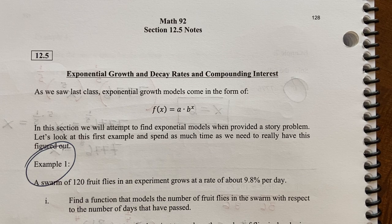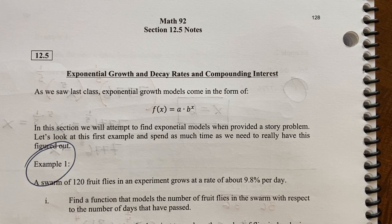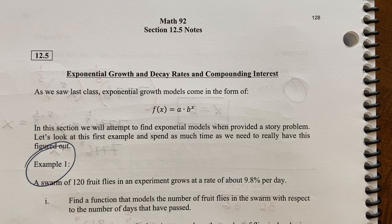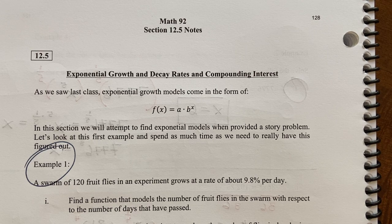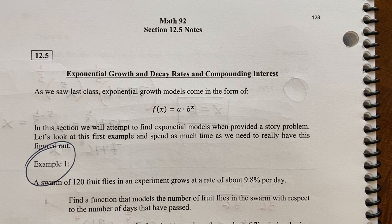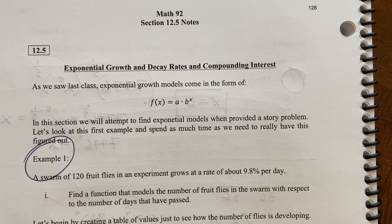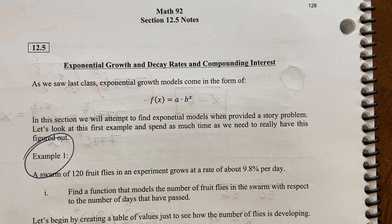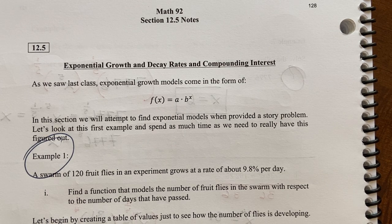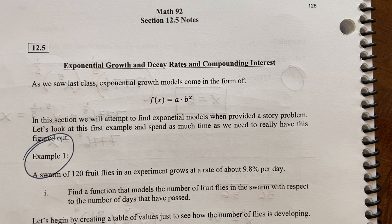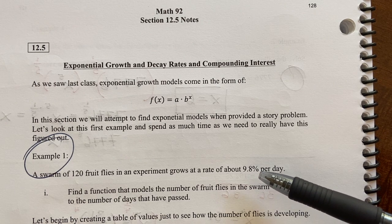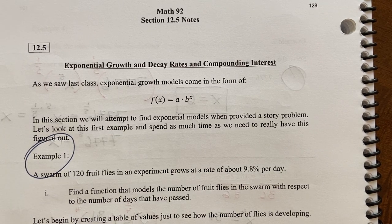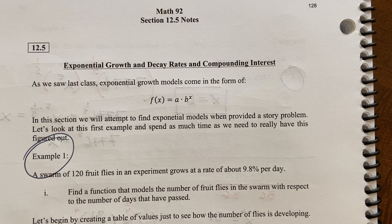The difference with this section is that we're given now a percentage rather than being told something is doubling or tripling or halving. We're just told a percent change. This is probably more closely tied to reality because things don't tend to change in these nice periodic ways. It's often a little bit more messy.